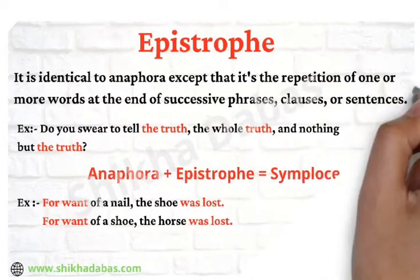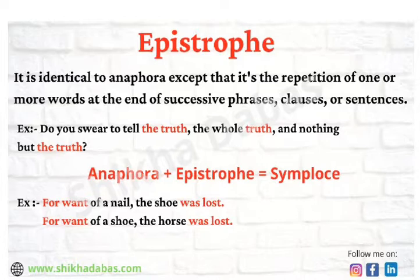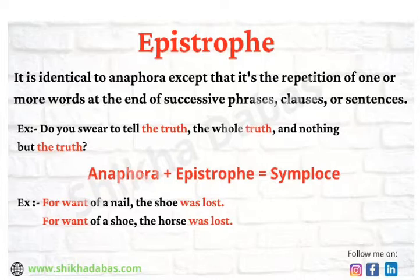The next literary device is epistrophe. It is a sort of opposite to anaphora — in anaphora the word repeats at the beginning of the sentence, but in epistrophe the word repeats at the end. A famous example is the courtroom oath: 'Do you swear to tell the truth, the whole truth, and nothing but the truth?' Here, 'the truth' at the end of every clause is an epistrophe.